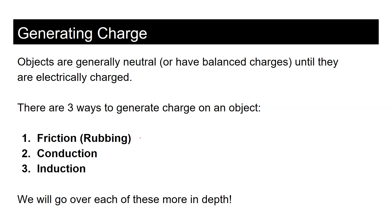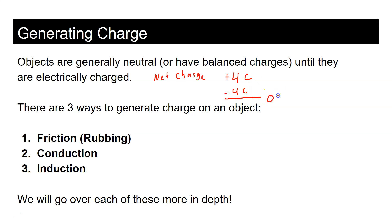There are three ways to generate charge. Objects are generally neutral, meaning they have balanced charges — the same number of protons as electrons, so the net charge is zero. To find the net charge, you add up the number of protons versus electrons. For example, positive four Coulombs plus negative four Coulombs equals zero — that's what it means to be neutral. The three ways to charge an object are friction, conduction, and induction.